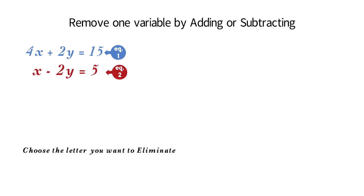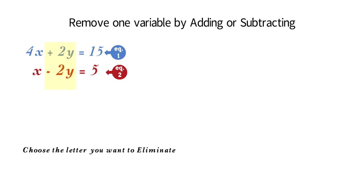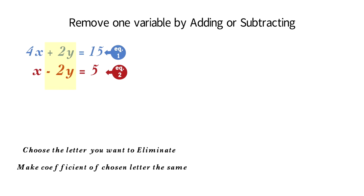The first step is to choose the letter you want to eliminate. You can choose any of the letters, but if you have one with the same coefficient, it would be best to choose that one because it will take care of step 2. So here, I will choose y. Next, we want to make the coefficient the same. Because we chose y, which has the same coefficient of 2 in both equations, there's nothing to do in this step.